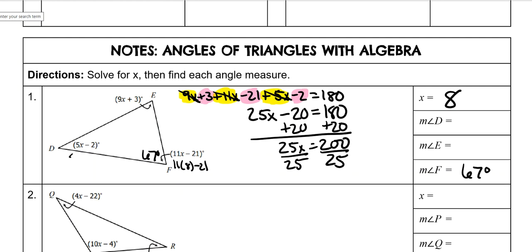Then 5 times 8 minus 2. Well, 40 minus 2 is 38. And then you could plug it in for E or you could subtract both of those angles from 180. It's whichever way, because both ways would work. I usually prefer to subtract from 180. So 180 minus 38 minus 67. And that would give me 75.